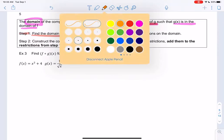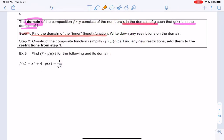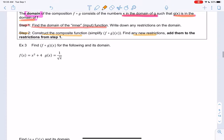Step 2 is then to find the composite function. So once we have the composite, if there's any new restrictions, that's what that second part of the definition is saying, we're going to add them. So let's just jump into an example and make sense of this, because I'm sure it's super confusing.